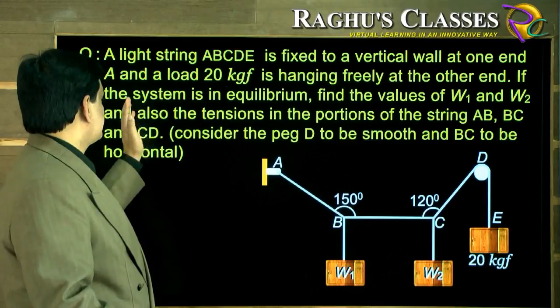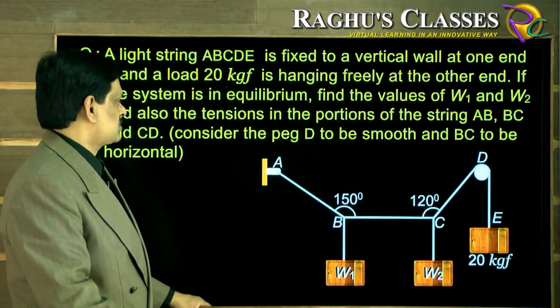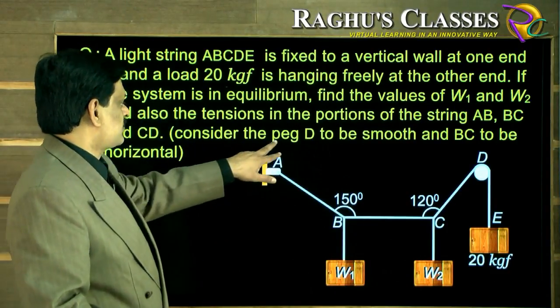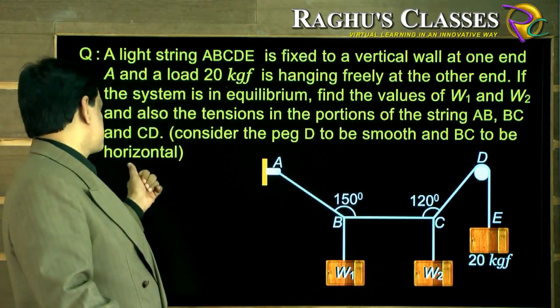If the system is in equilibrium, find the values of W1 and W2 and also the tensions in the portions of the strings. Consider the peg D to be smooth and BC to be horizontal.